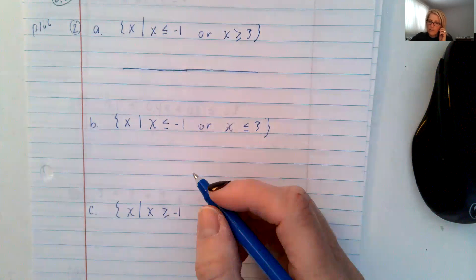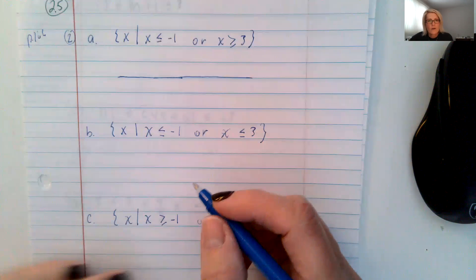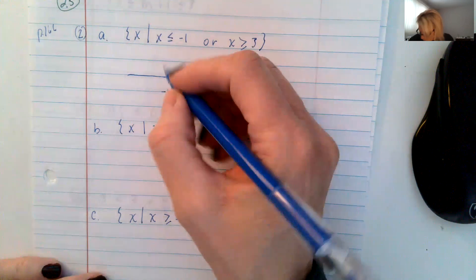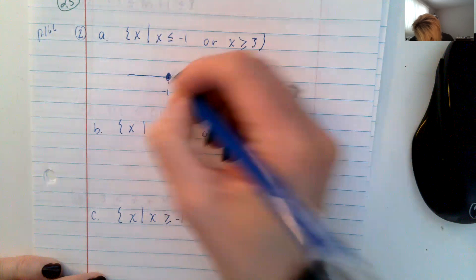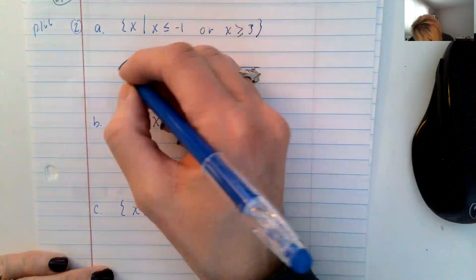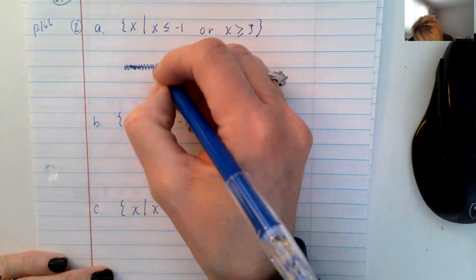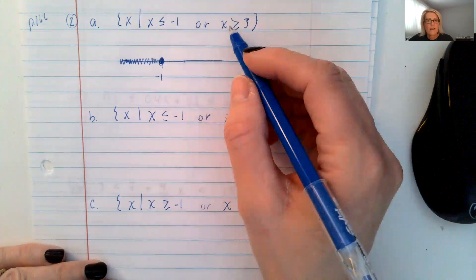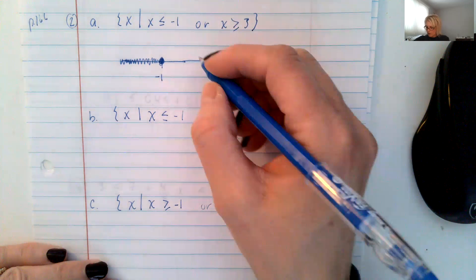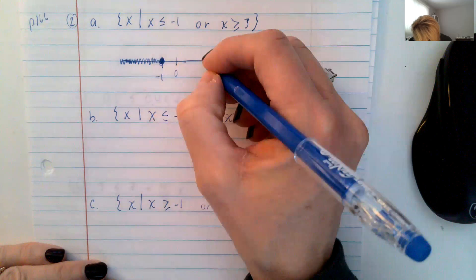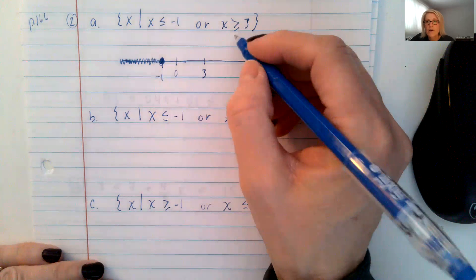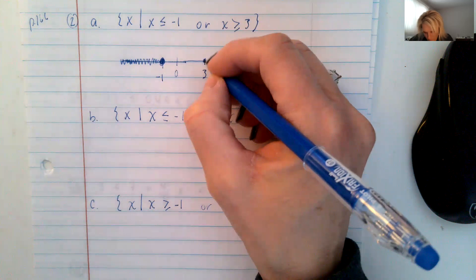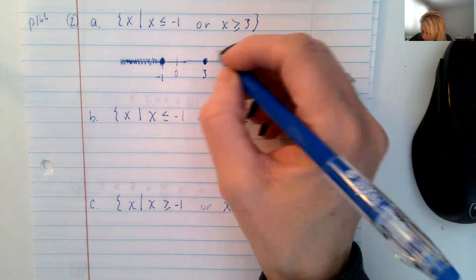I'm going to graph it on the number line first. I'm going to mark negative one, and because it's less than or equal to, we're going to color in the circle. Then because it's less than or equal to, we're going to shade it to the left. And then x is greater than or equal to three — so three is right here, we're including three, and we shade to the right.